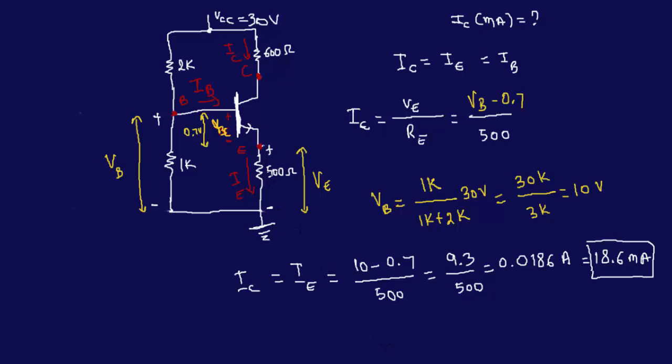A common source of confusion is the voltage notation. VCC is the voltage source for the entire circuit, not just one branch. VE is the voltage at the emitter node going to ground. VB is the voltage at the base node going to ground. Sometimes students confuse these, but if you think of each as the voltage across the respective resistor path to ground, it becomes systematic. If you have any questions, let me know — I'm glad to help.